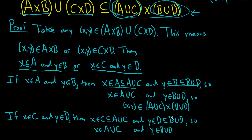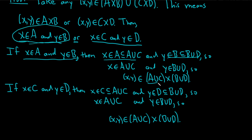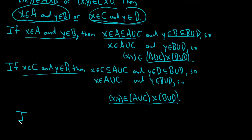So this means x is in A union C, and y is in B union D. The first component of our ordered pair is in A union C and the second component is in B union D, so (x, y) is in (A union C) cross (B union D).